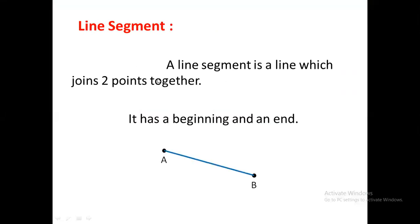What is line segment? A line segment is a line which joins two points together. Segment is a part. What is the meaning of segment? Part.